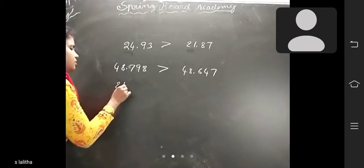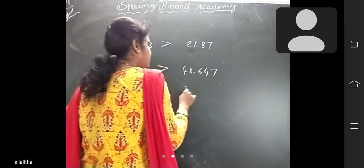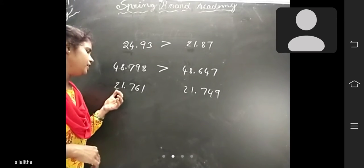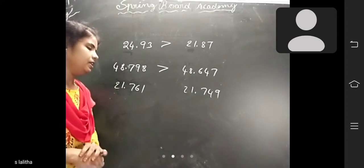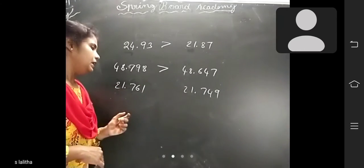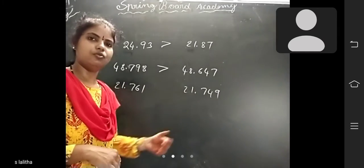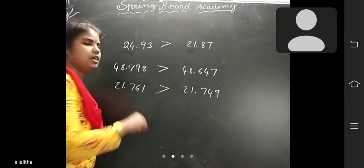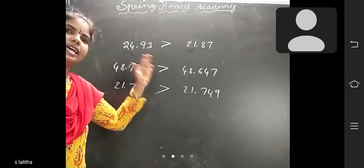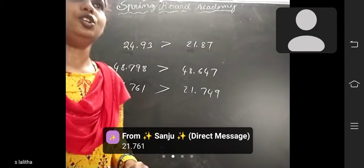Next example: 21.761 and 21.749. Whole number parts are both 21 — equal. Tenths place: both are 7 — equal. Hundredths place: 6 versus 4 — 6 is greater, so 21.761 is greater. Like that, you should compare decimals: first compare the whole number part, then move to tenths, then hundredths, and so on.